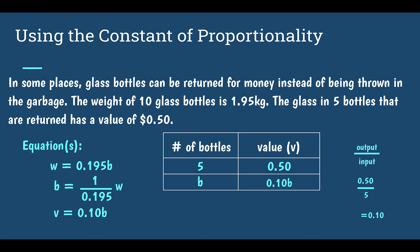Just like before, if I want to find out what B is equal to, I would do the reciprocal: 1 over one-tenth, then multiply that by V. I didn't simplify the previous one because it doesn't come out super nicely — it's easier to leave it as a fraction.